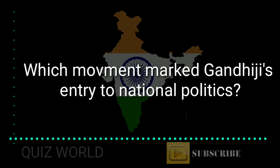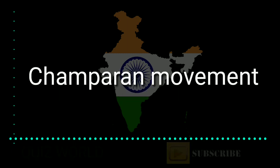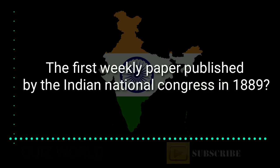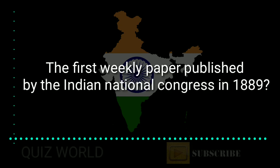Which movement marked Gandhi's entry into national politics? Answer is the Champaran Movement in 1917 in Bihar. The first weekly paper published by the Indian National Congress in 1889...